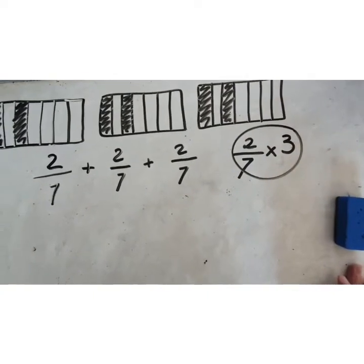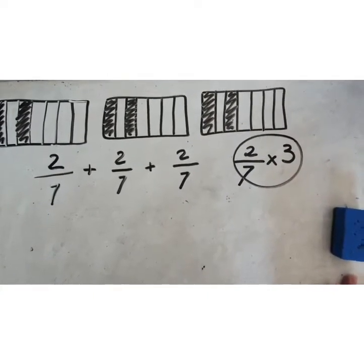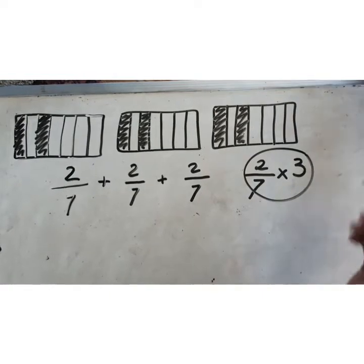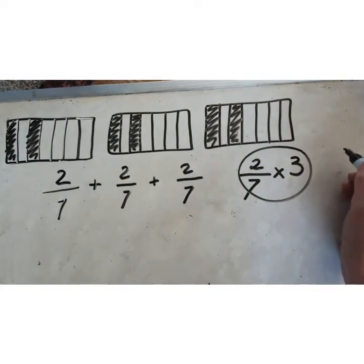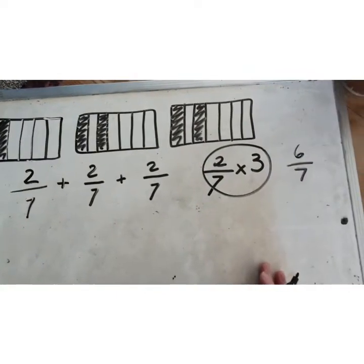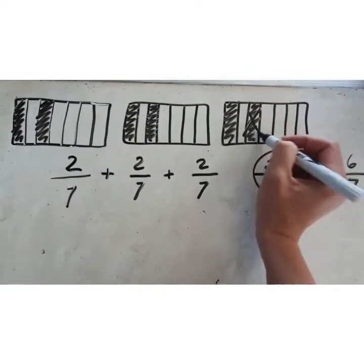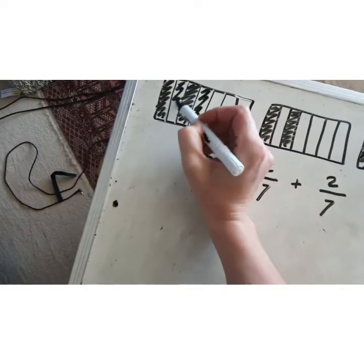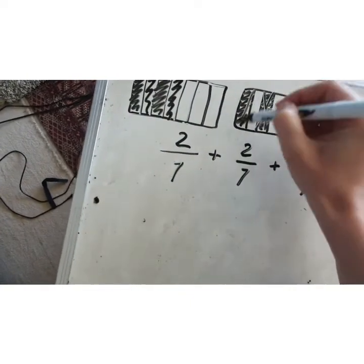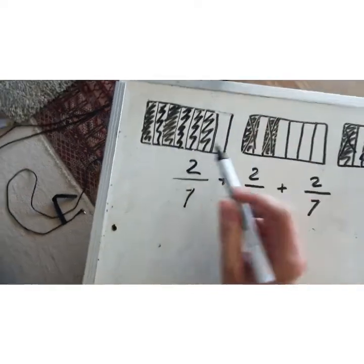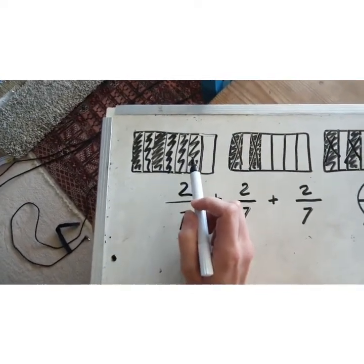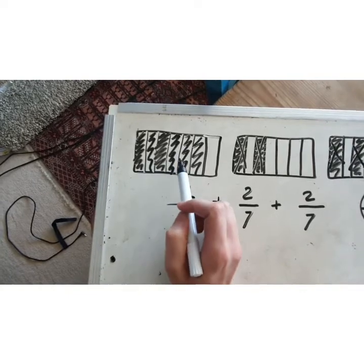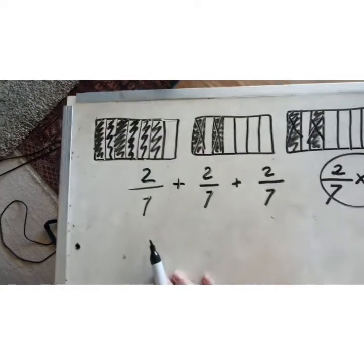Pause the video and try to answer that question independently. The answer is six sevenths. If I take the shaded parts from the second and third rectangles and colour them onto the first rectangle, I still have the same number of parts shaded, and you can count that I have shaded in six sevenths.